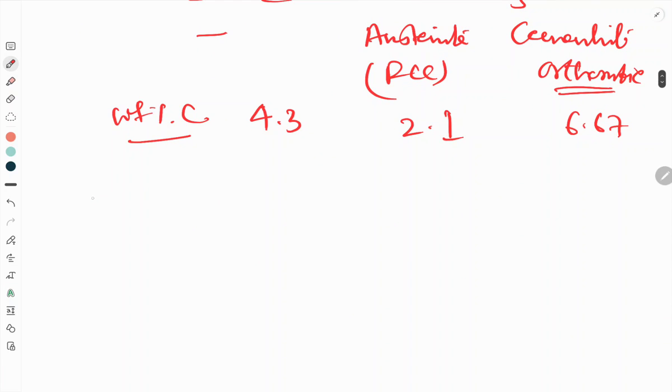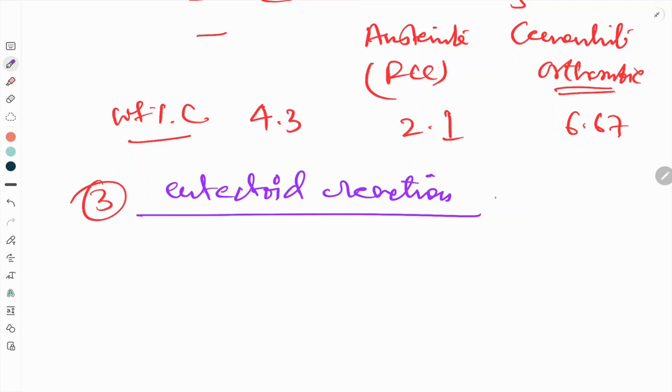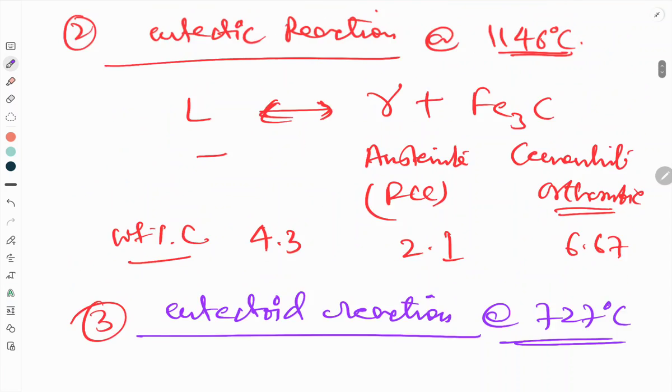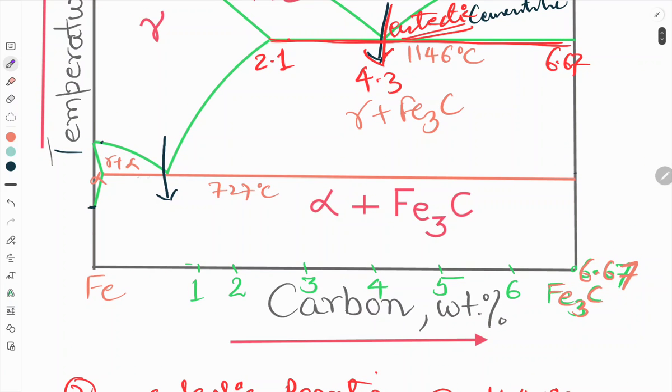Next you will see, third is eutectoid, which happens at 727 degree temperature.